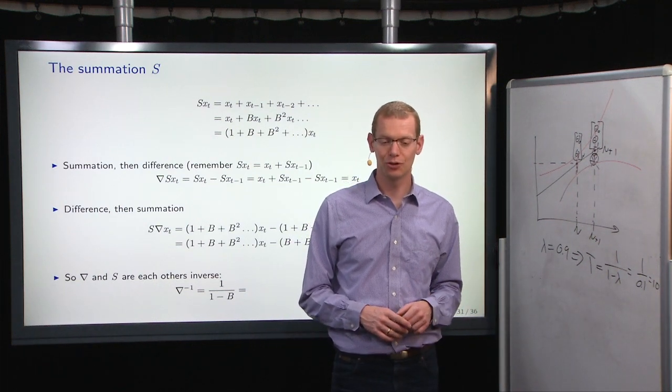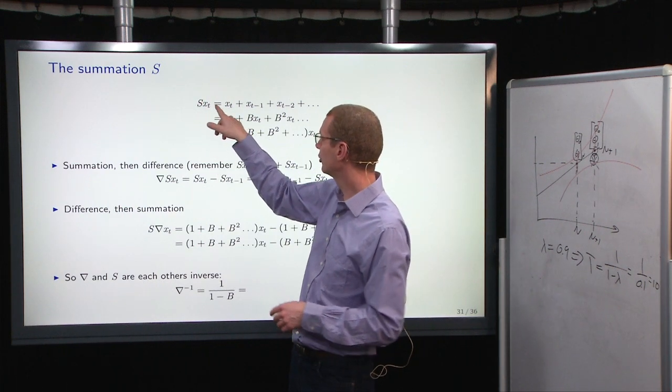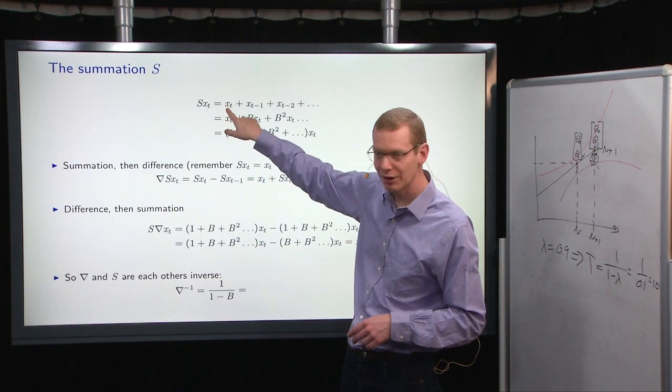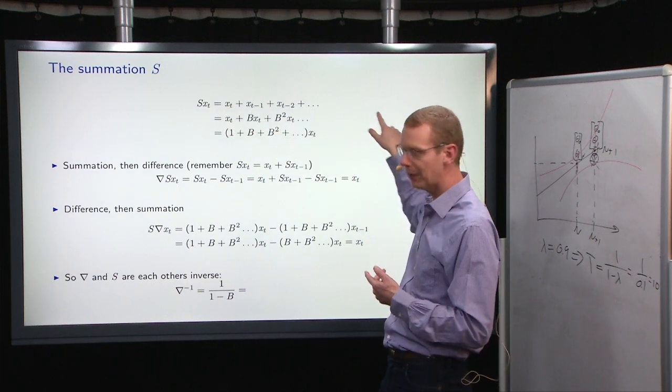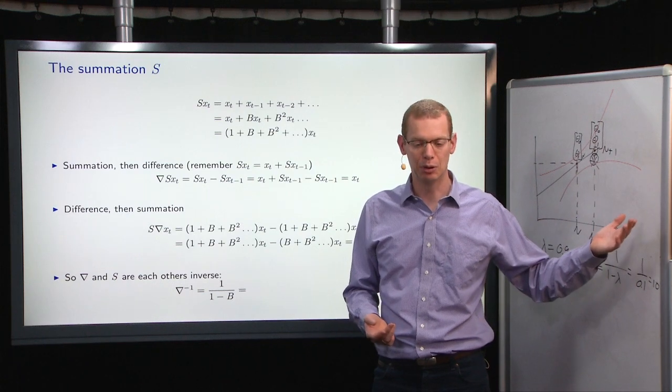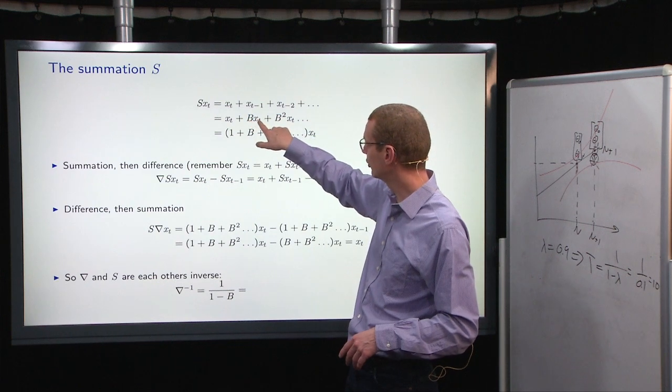The next one is the so-called summation. So the summation of the time series is the sum of x_t, is the sum from x_t and all the way backwards in time to the beginning of time. Now that again, you can say x_{t-1}, that's B x_t,